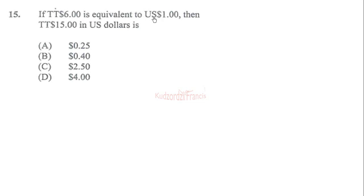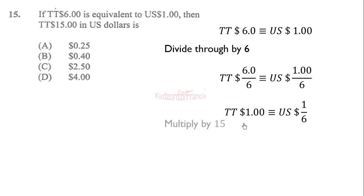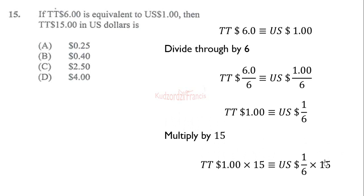Question 15: if sixty TT dollars is equivalent to one US dollar, then fifteen TT dollars will equal how many US dollars? Using the unit train method, if six is equivalent to one, dividing through by six gives one TT dollar equivalent to one over six US dollars. Multiplying both sides by fifteen, we get fifteen over six which is the same as two point five. So fifteen TT dollars equals two point five US dollars. This is the correct answer based on the conversion rate.